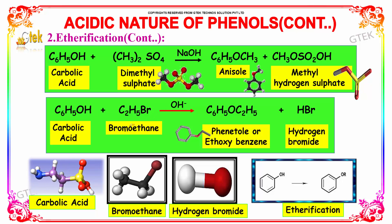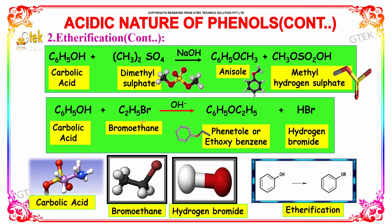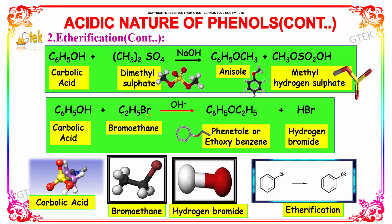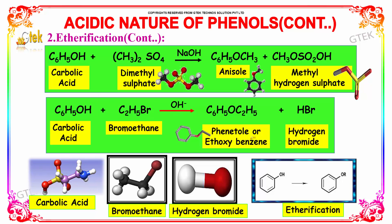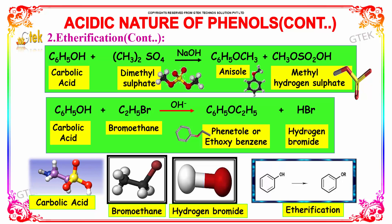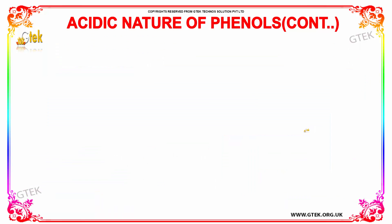When carbolic acid reacts with bromomethane, the bromine replaces the OH group to produce phenetole (ethoxybenzene) along with hydrogen bromide.